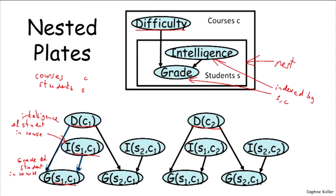Let's think about the implications of this model. This tells us there is a course-specific intelligence for every student in every course, and that may or may not be what we want. If you're taking radically different courses — one is an art class and one is a math class — you might want two different kinds of intelligence, representing art skill and math skill separately. Of course that complicates the model. But if you have courses that are similar and take a similar set of skills, you might not want independent intelligence random variables, assuming the student has two independent intelligences for the two different courses. In that case, you don't want the intelligence variable to be part of the course plate.